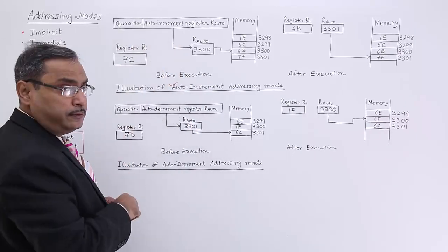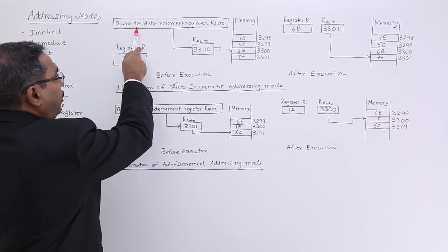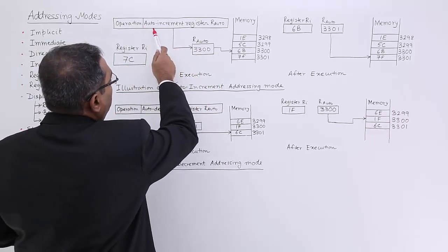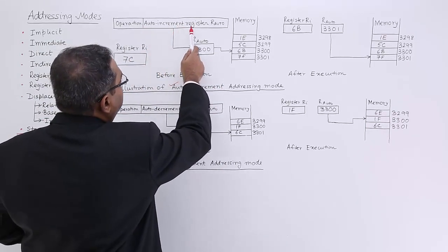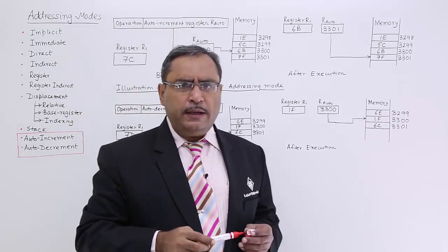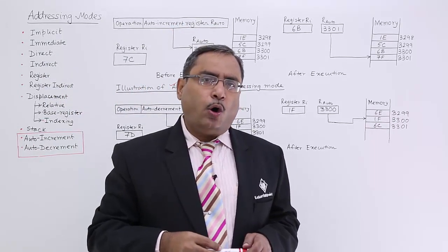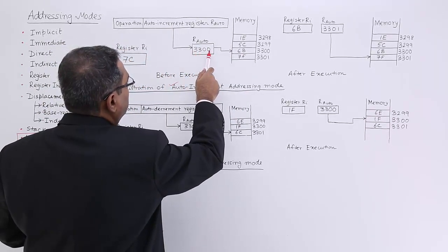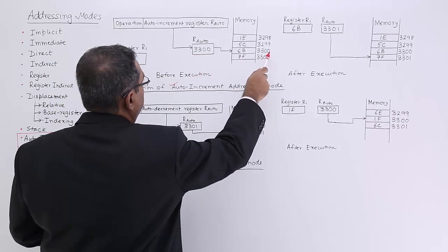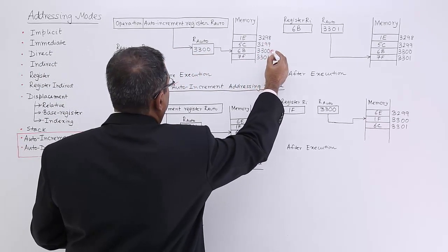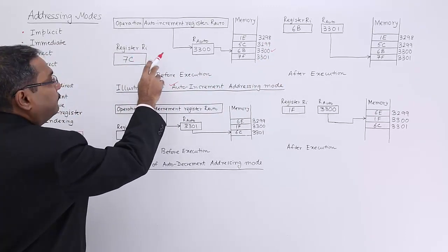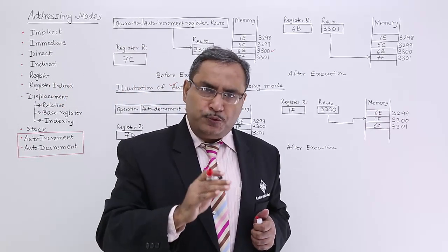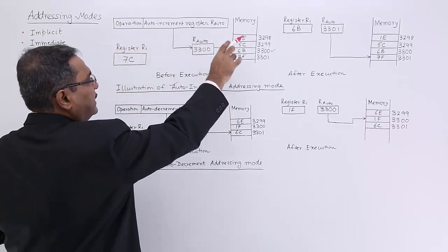You see this is the instruction — it has the operation code, and it mentions one of the auto increment register's name. Let us say the register name is R auto. This R auto, let us suppose, is pointing to memory location 3300. This is the register where the value will be read and placed. This is the instance before execution.